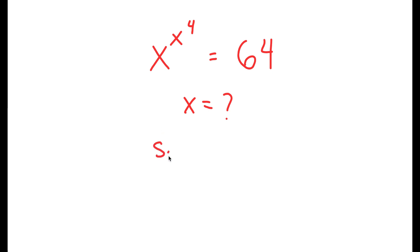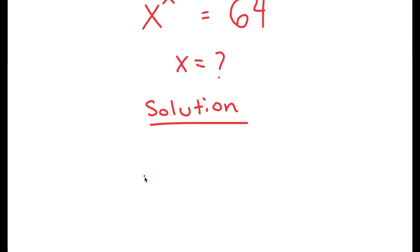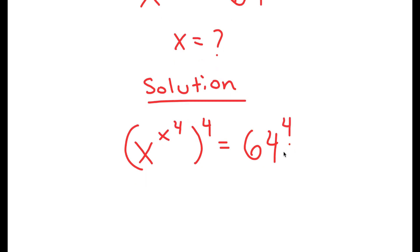For my solution, I'm going to first start by taking the power of 4 on both sides. So I get x to the power of x to the power of 4, to the power of 4, is equal to 64 to the power of 4.